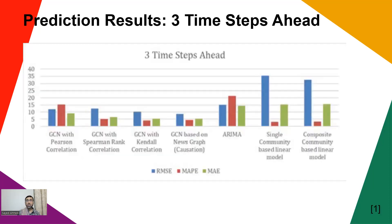This is three time steps ahead prediction of stock prices. You can see all the different things are there: the four different graphs, news-based, Kendall, Spearman, Pearson, ARIMA as the statistical model. This is also their graph-based single community model and composite community model.